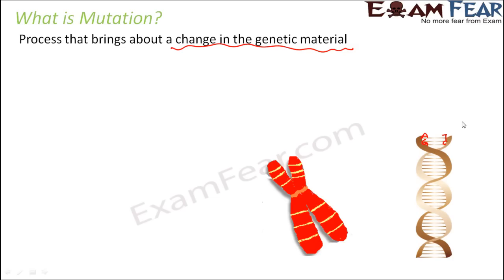So what happens when there is a change in the genetic material? There can be a change in the sequence of bases in the nucleotide, a change in the structure of the DNA, or a change in the structure of the chromosome. Any such change will impact protein synthesis.